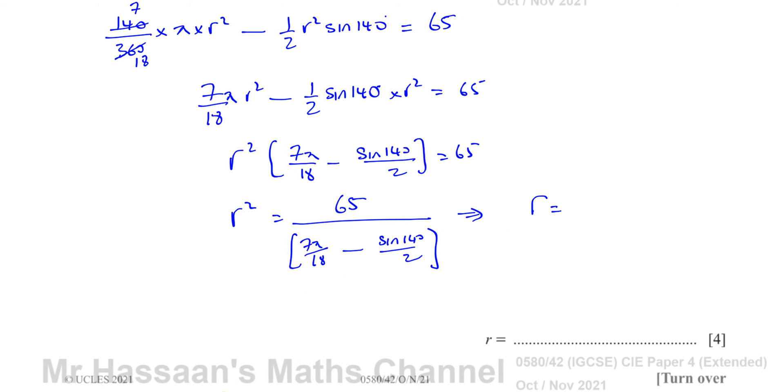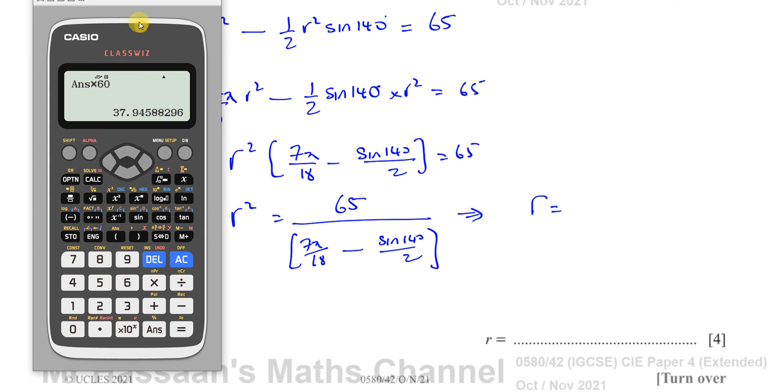Let me just put this in my calculator. So I'm going to have the square root of 65 over 7 pi over 18 minus 0.5 times the sine of 140. I'm going to make sure I'm in degree mode, which I am. That's very important.